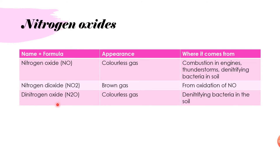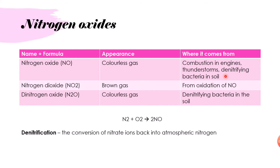Moving on to nitrogen oxides: nitrogen has many oxides, but the main ones are NO (nitrogen oxide), a colourless gas formed from combustion in engines where atmospheric nitrogen combines with oxygen under high heat, and also formed through thunderstorms and denitrifying bacteria in the soil. Denitrification is the conversion of nitrate ions back into atmospheric nitrogen, in contrast to nitrification which was the conversion into nitrate ions.